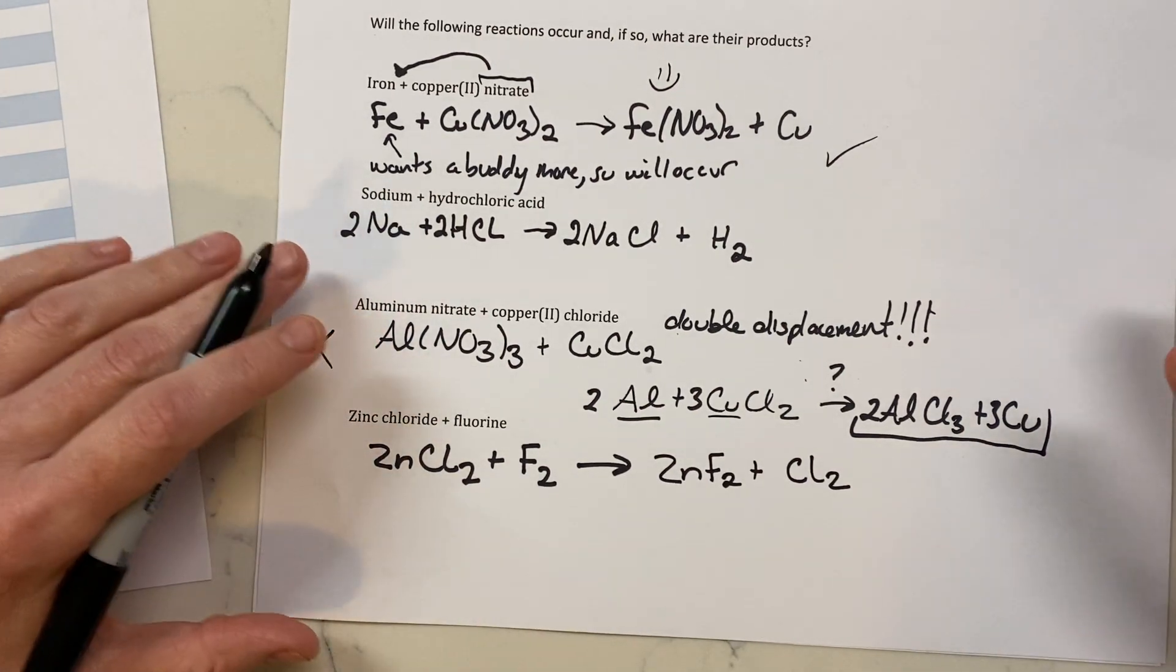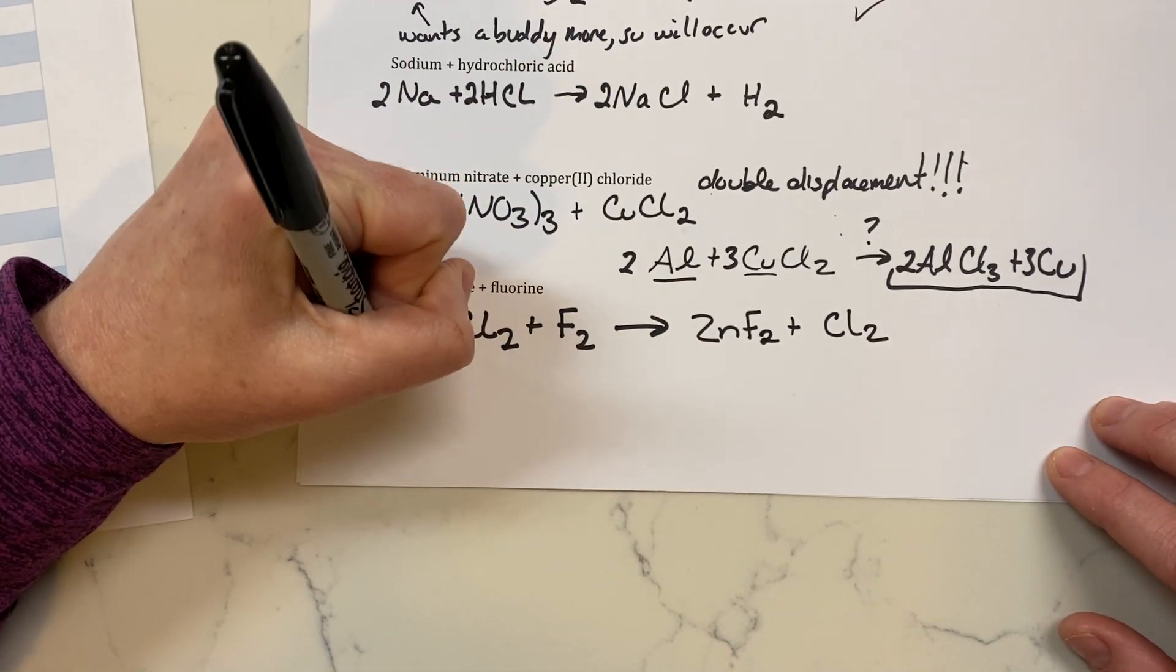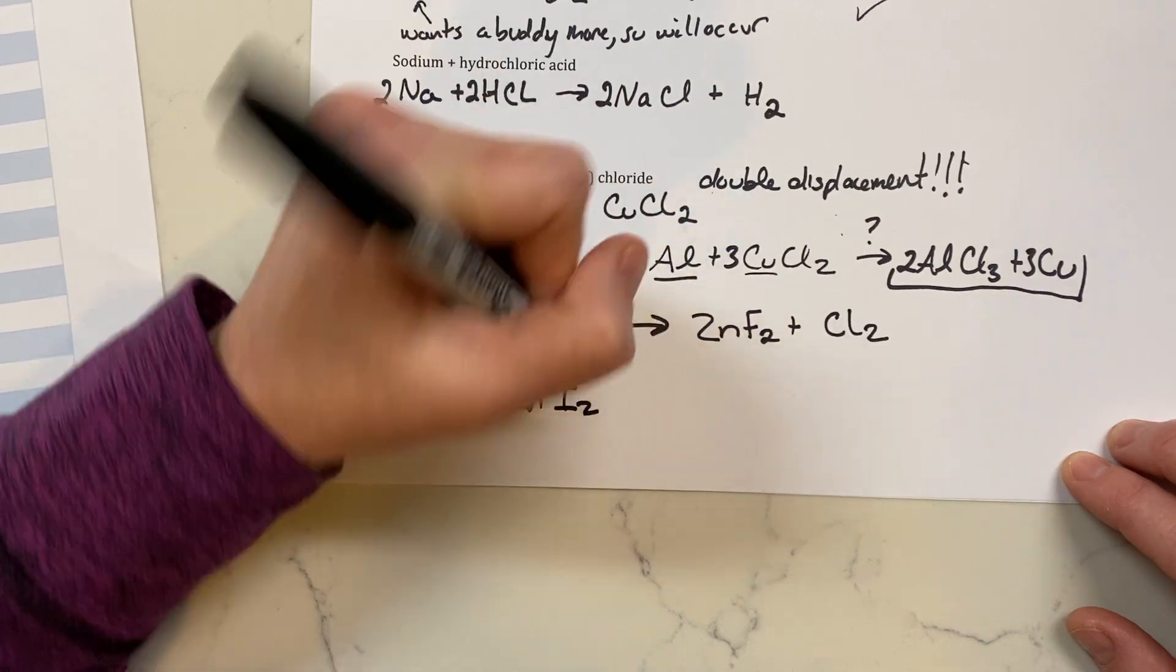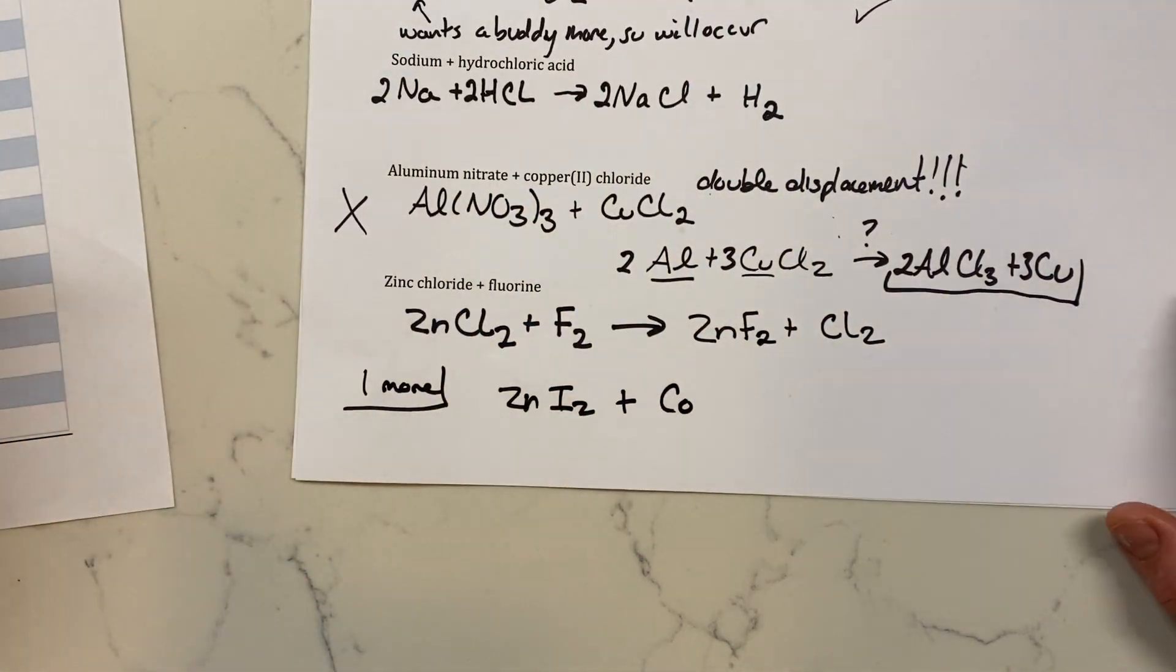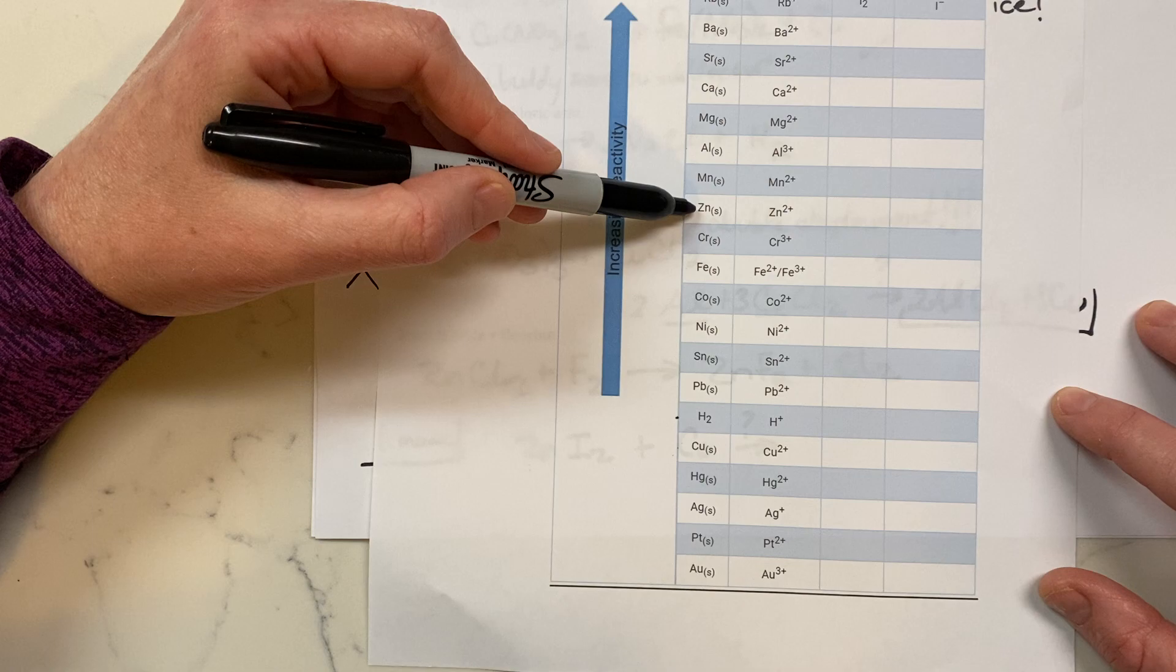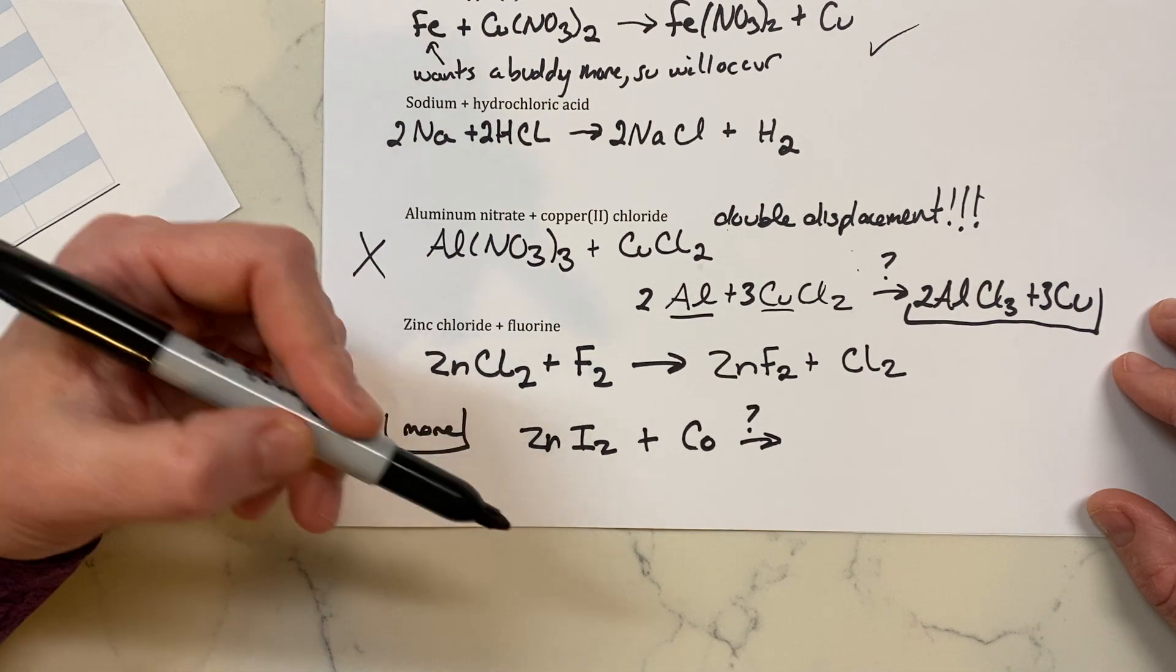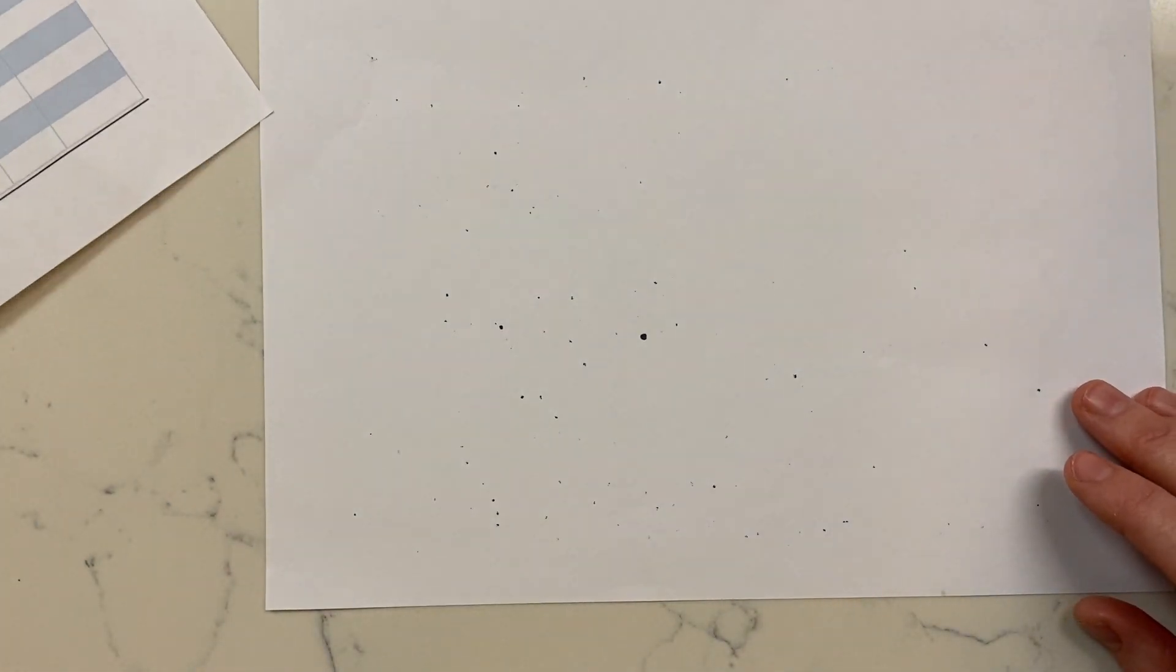Let's do an example where it wouldn't occur. So let's go ahead and say we've got one more. Let's say zinc iodide plus cobalt. And I want to know if this reaction is going to occur. When we go over here, we're looking at zinc and cobalt. But zinc is higher on the list than cobalt is. So zinc wants a buddy more. Does zinc already have a buddy? It does, and therefore this reaction would not spontaneously occur.